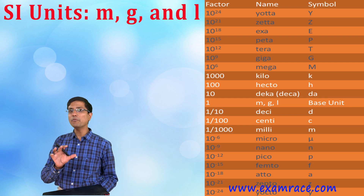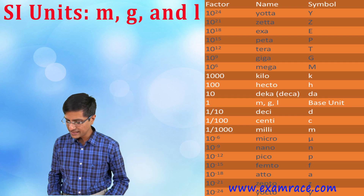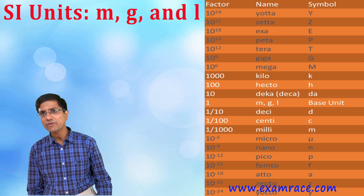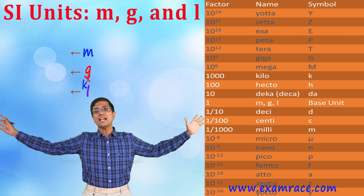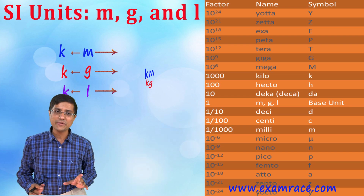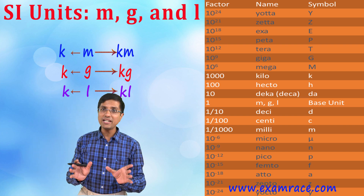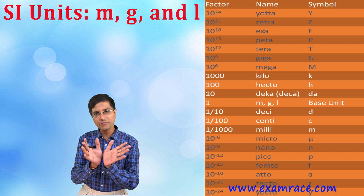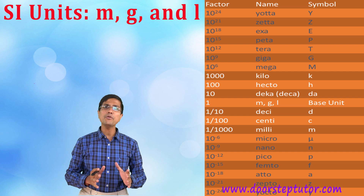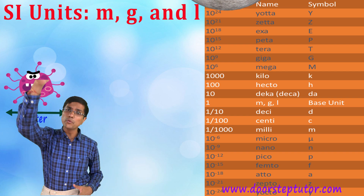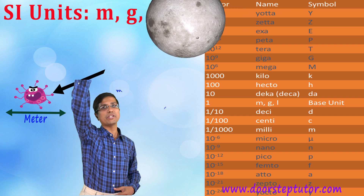The problem with having only one unit for distance is that we want to measure very small distances as well as very large distances using the same unit. Whereas the meter is a fixed length, if I have to measure the distance between Earth and the Moon using this fixed length, I will need a lot of such meters.